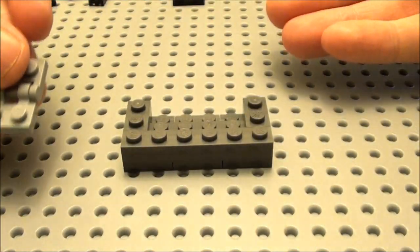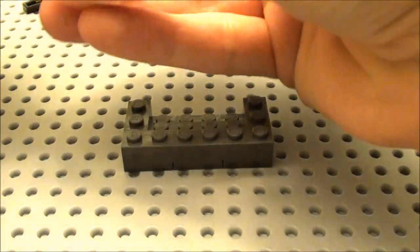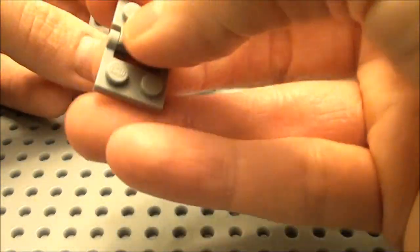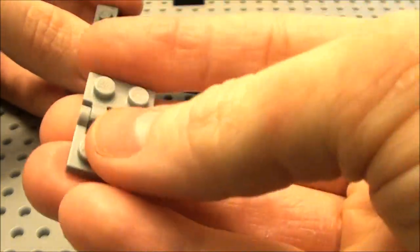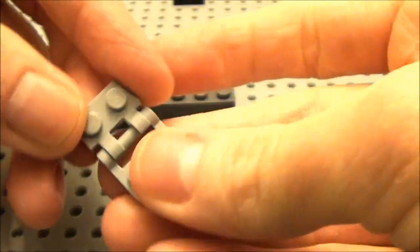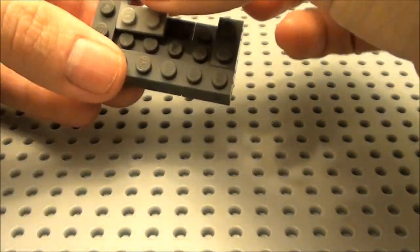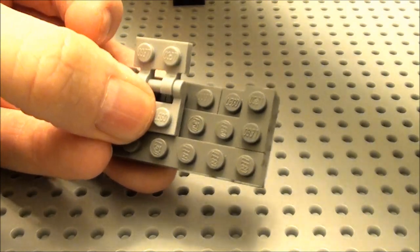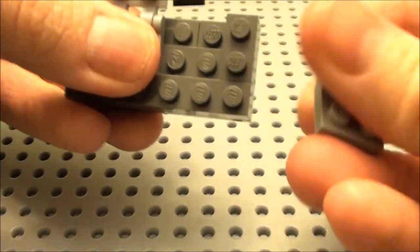Now I want to put an opening lid on the top of this. So I'm just going to take two of these hinge type style plate brick things.